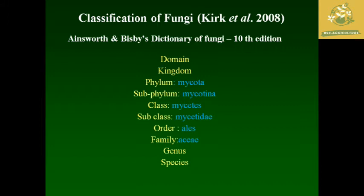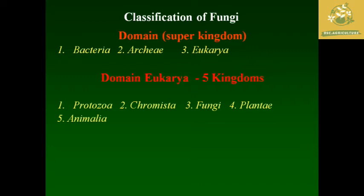We are going to see the classification of fungi. It was given by Ainsworth in Bibitzi's Dictionary of Fungi at the 10th edition. While seeing them, they come under the phylum Mycota and phylum Mycotina, classes Mycetes, subclass Mycetidae, order -ales, and family -aceae. Genera and species are said to be different for each and every organism. While seeing the classification of fungi, they classify it into three super kingdoms, also called domains, which are Bacteria, Archaea, and Eukarya.